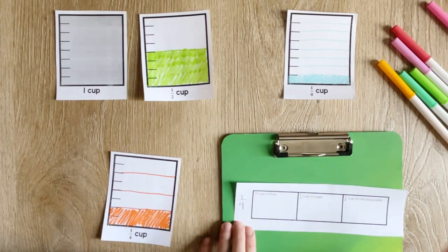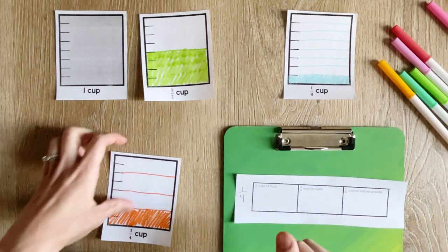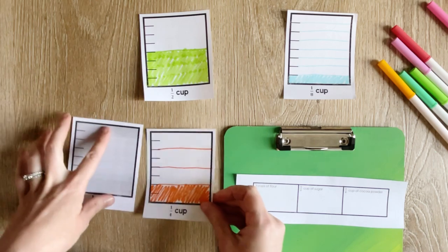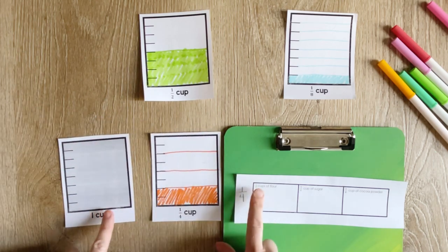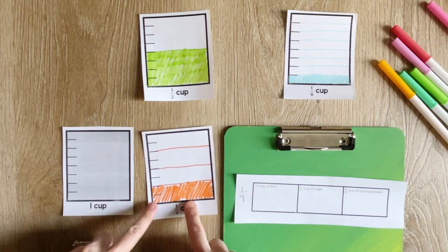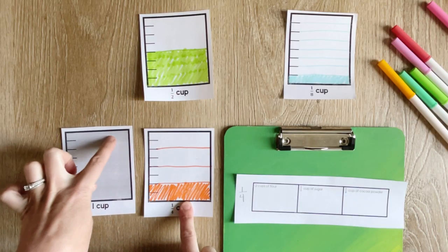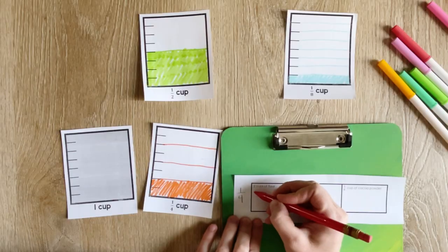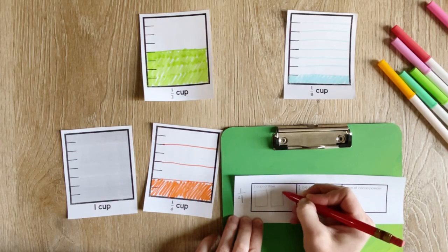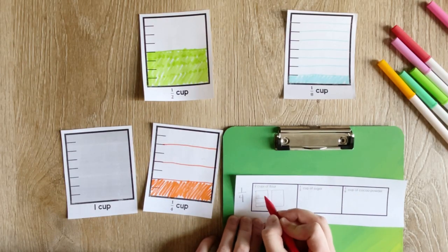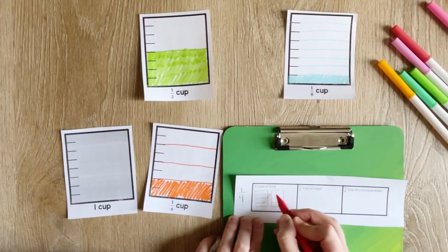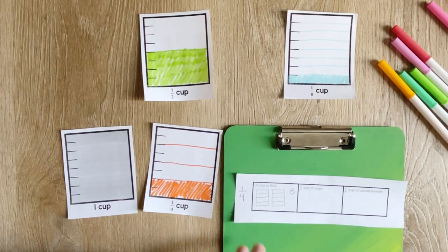And the first thing we're going to think about is trying to get two cups of flour using only the one-fourth cup for measuring out each amount. So how many times do I need to fill up my one-fourth cup? We can count here. We can also draw this visual to see what we need. I'll need to fill it up four times to get one cup and then another four times to get my second cup for a total of eight times.